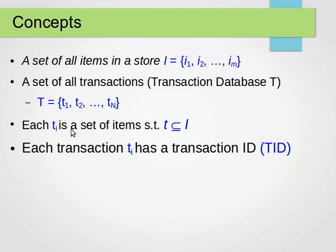From my previous video on association rules, we mentioned that we can consider I as a set of all items in a store — item 1, item 2, all the way to item M. The store has M items. We also have a transaction database T which has all transactions T1, T2, all the way to TN. Every transaction TI has one or more items from I, and every transaction is given a transaction ID, TID.